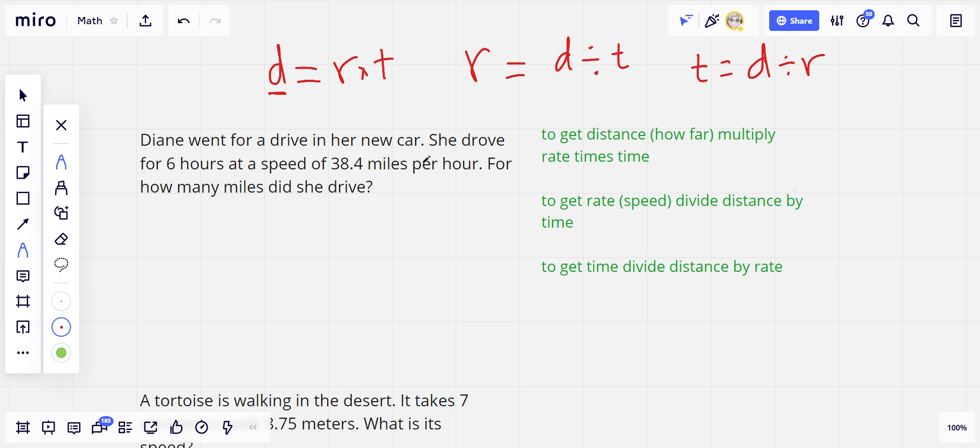Diane went for a drive in her new car. She drove for six hours - so that's our time - at a speed of 38.4 miles per hour, that's our rate. For how many miles did she drive? That's distance. So we're trying to find distance, and distance equals rate times time.